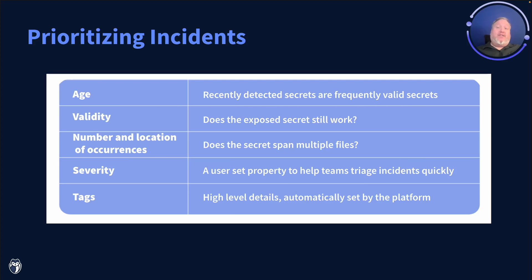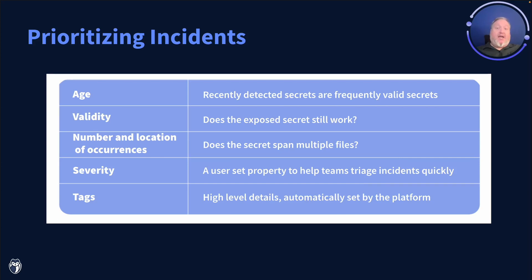If known, you can see the severity of the incident. This can be set by your team to various levels of severity to help you triage when you're dealing with a large number of incidents at once. Finally, with tagging, we can quickly show you information about the secrets in question, such as if it's a regression of a once-resolved issue that's showing up again, if it's a test file or a sensitive file, if it's been exposed publicly, or if it was discovered from a historical scan.